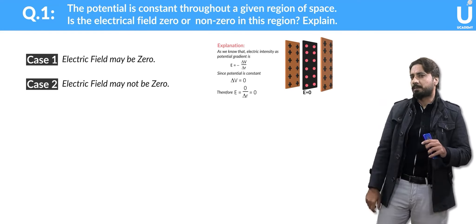Now if I look at the other case: I consider this plate negative. What is the direction of electric field lines? Electric field lines will go from positive to negative. If you consider an imaginary surface perpendicular to the electric field — which is parallel with the electric field lines — on the whole surface the potential value is the same, so it is a potential surface and the potential difference will be zero. But remember, electric field lines exist everywhere, so here the electric field is not zero. The value of this surface is the same at a 90-degree angle.